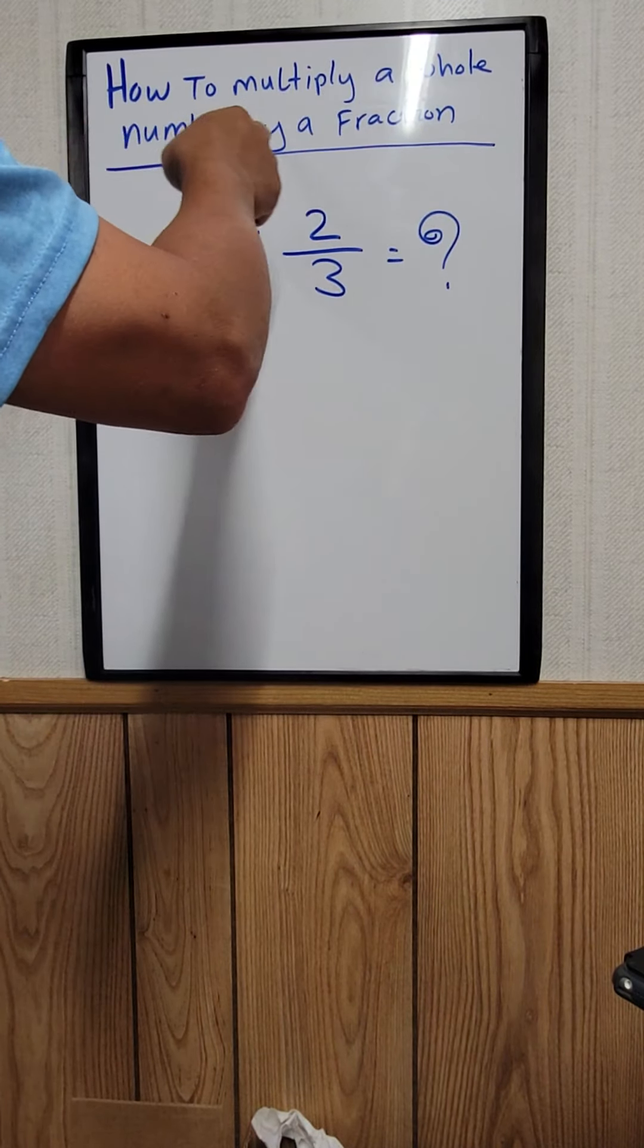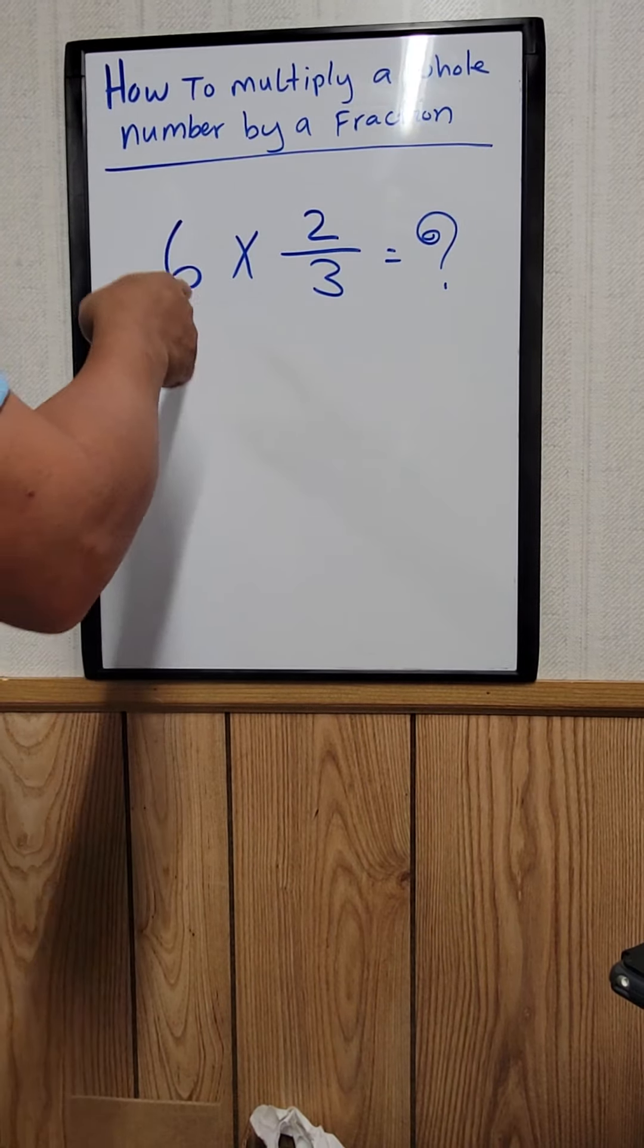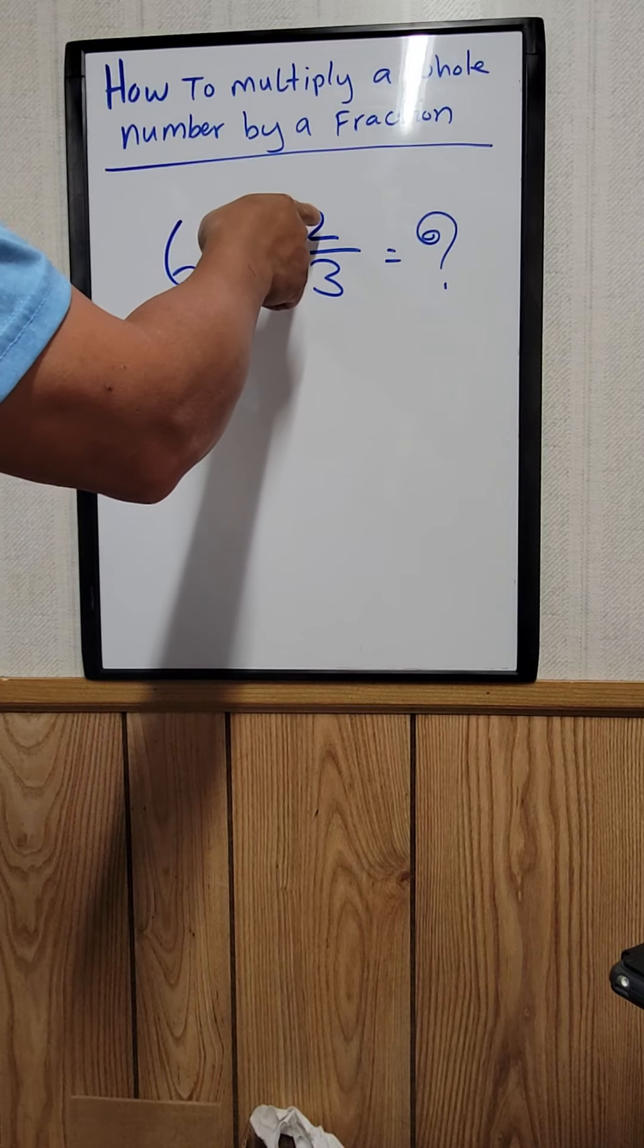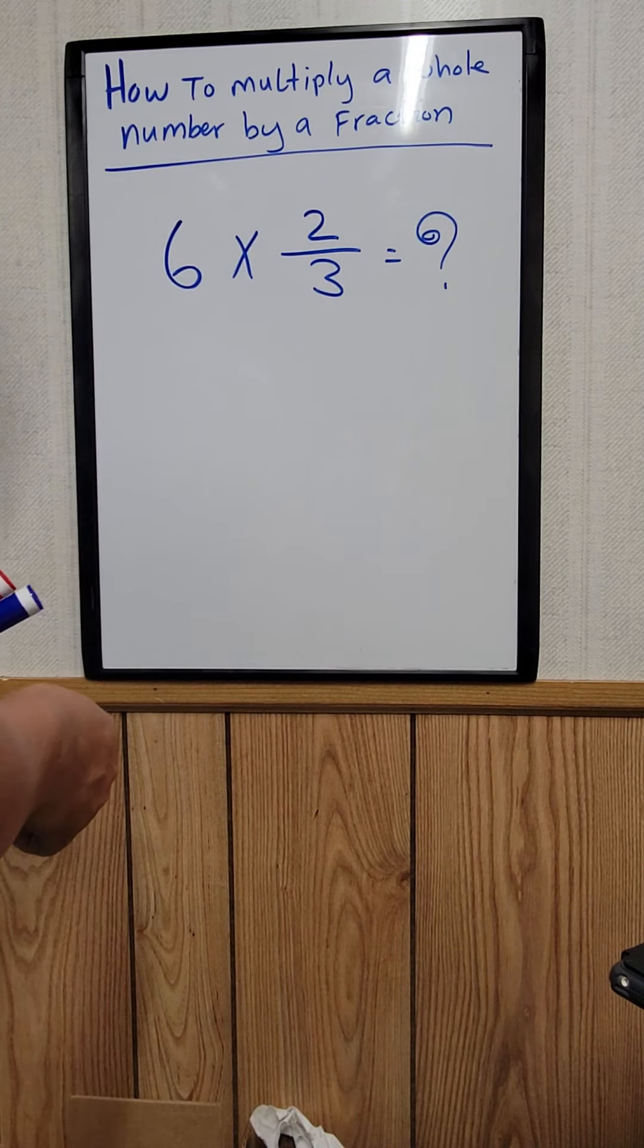How to multiply a whole number by a fraction. For example, right here, 6 times 2/3 equals what?